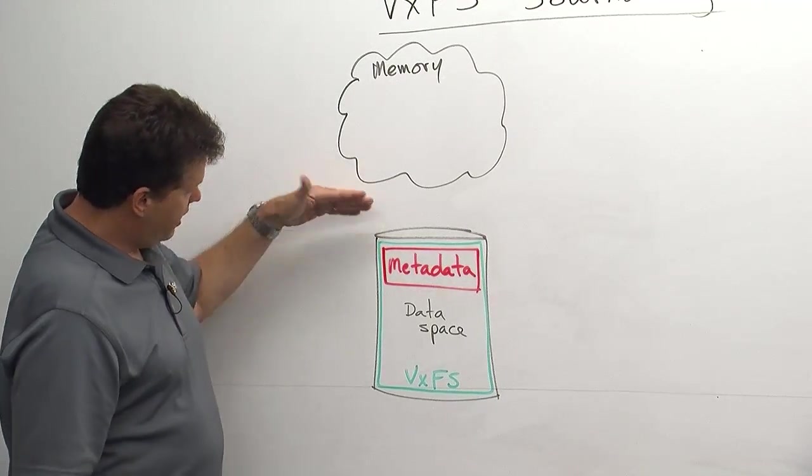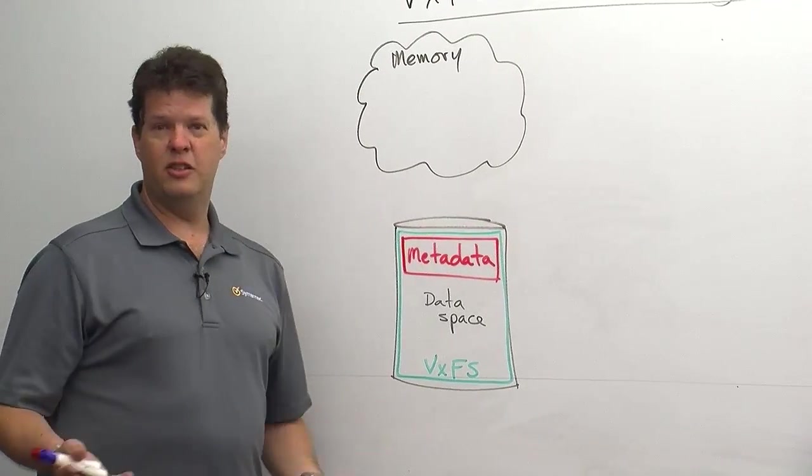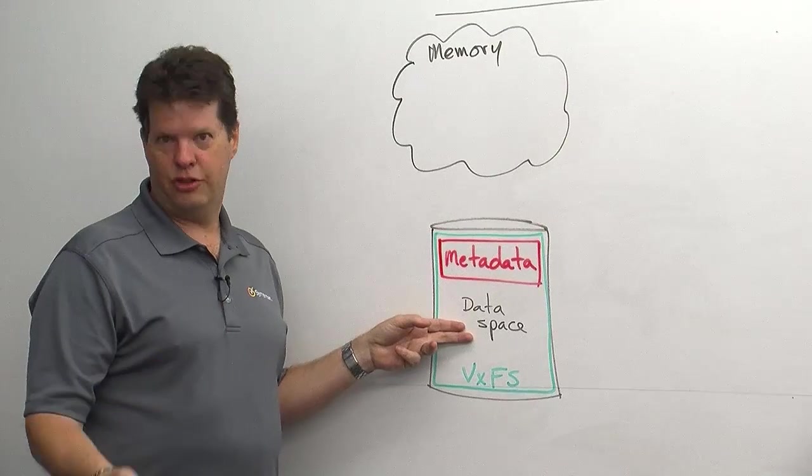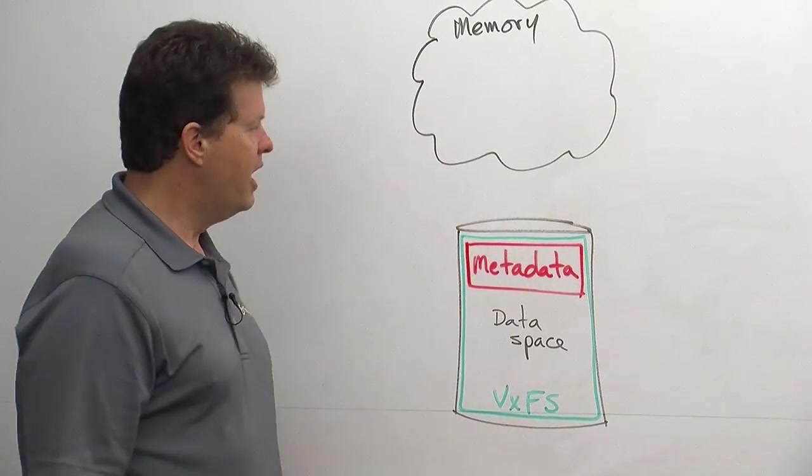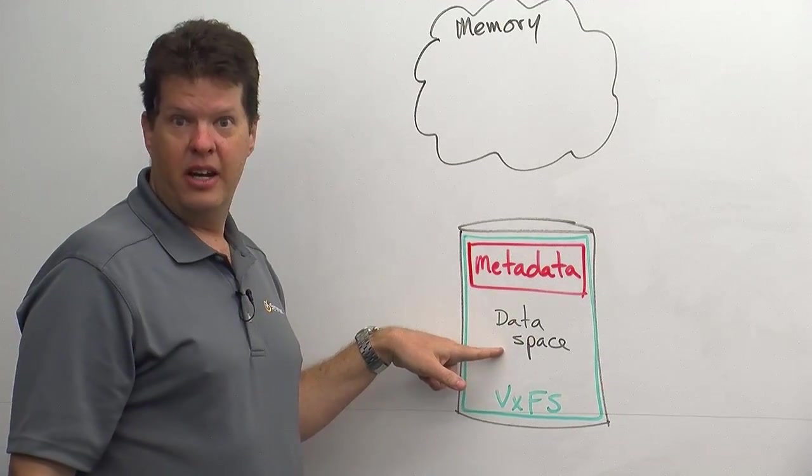So here I have a set of disk space, I have a file system on this in green, and the file system is made up of two pieces: metadata and basically our space where files go, kind of the general file system. The metadata is what I call the road map of where our data resides out here.